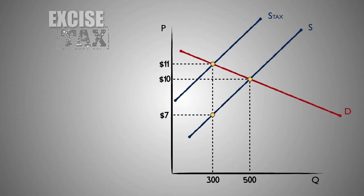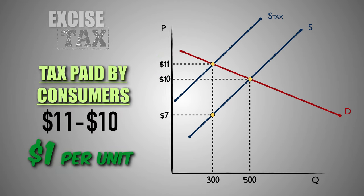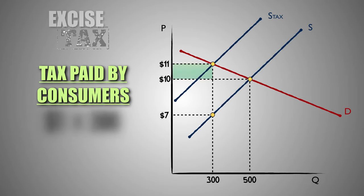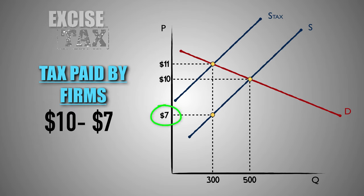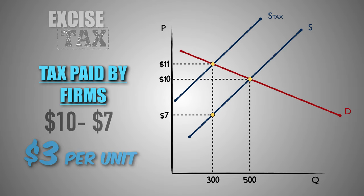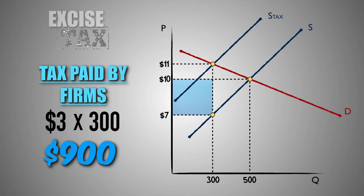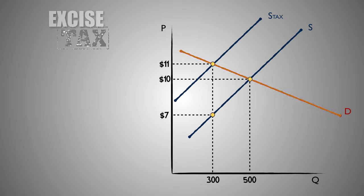We can also determine how firms in the industry shared the tax burden with consumers. Before the tax, the equilibrium price in the market for Good S was $10. However, after the $4 per unit excise tax was imposed, the price of Good S rose to $11. Because the price paid by buyers increased by only $1, we can conclude that consumers paid a fourth of the tax burden — they paid $1 of the $4 tax through a higher product price. The portion of total tax revenue paid by consumers was $300. The remaining three-fourths was paid directly by producers, who kept the seller's price of $7 per unit after paying $4 per unit in taxes. The portion of total tax revenue paid by firms is $900. Because the demand for Good S is more elastic, consumers are more responsive to price changes — even a small change in price will significantly reduce their consumption. Knowing this, firms passed a smaller portion of the tax burden onto consumers and paid a majority of it themselves.